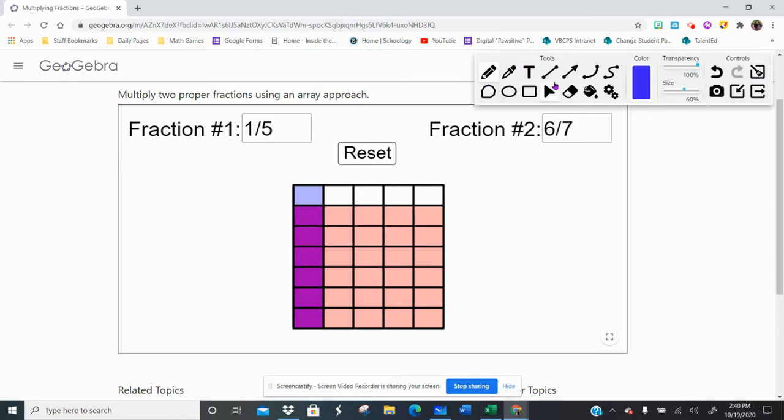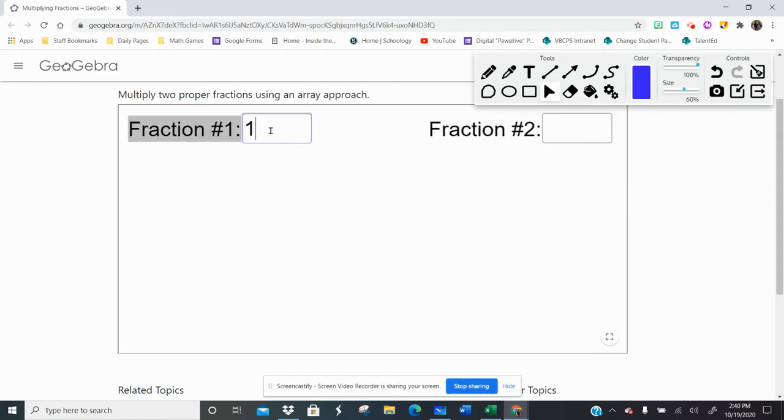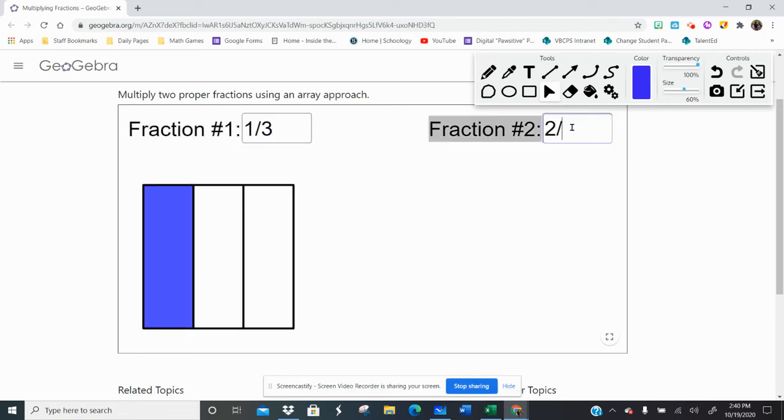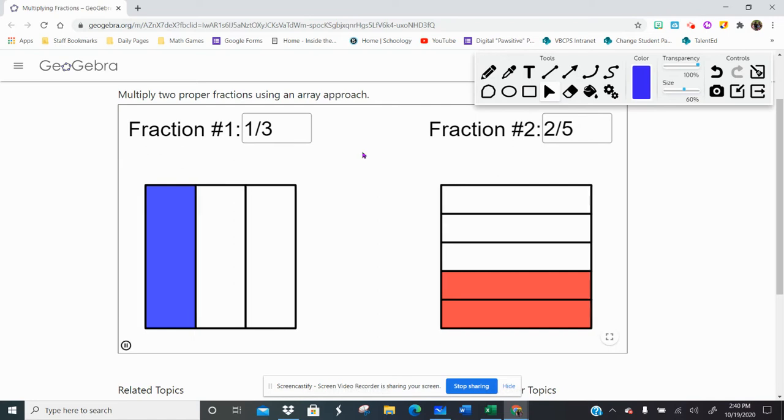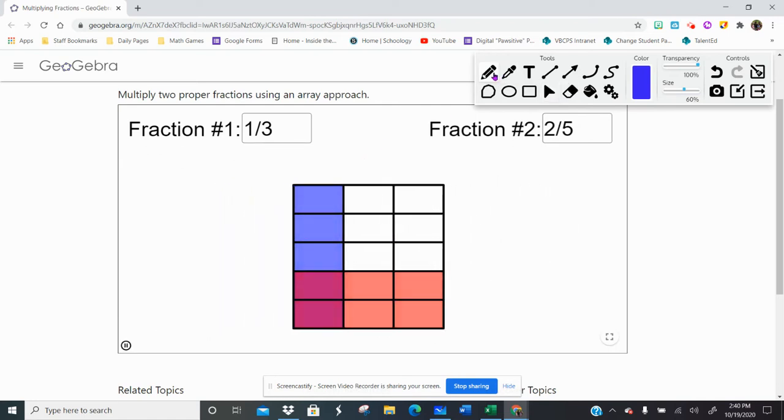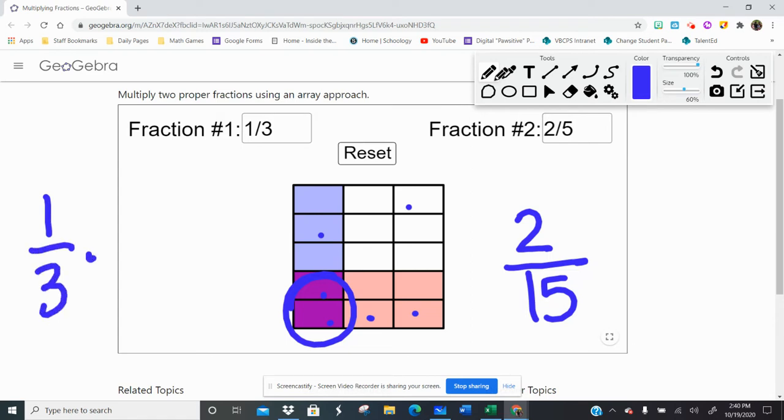Let's try another one. So let's try one third, one slash three, one third. And let's reset. Sorry. One third, and then two fifths. So I have my two fractions. Once I overlap them, I have one, two, three, four, five, six, seven, eight, nine, ten, eleven, twelve, thirteen, fourteen, fifteen total squares, and two of them are double colored. So one third times two fifths is two fifteenths. So that's just a simple way of seeing how to model multiplication.